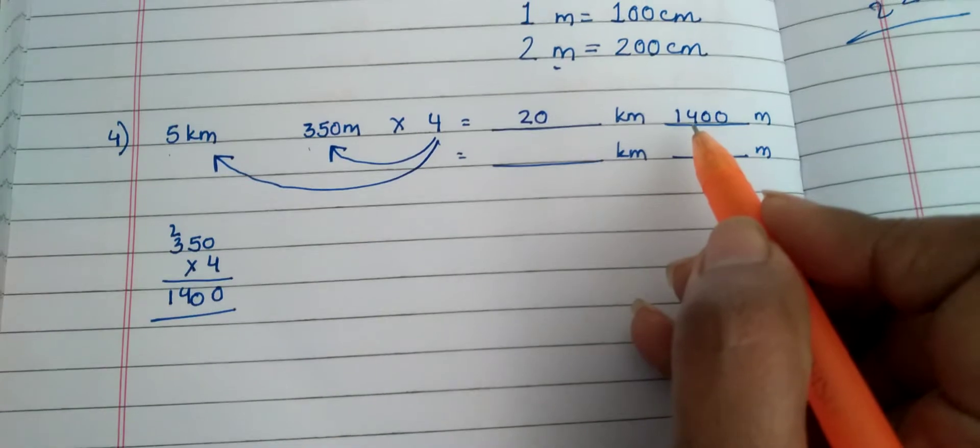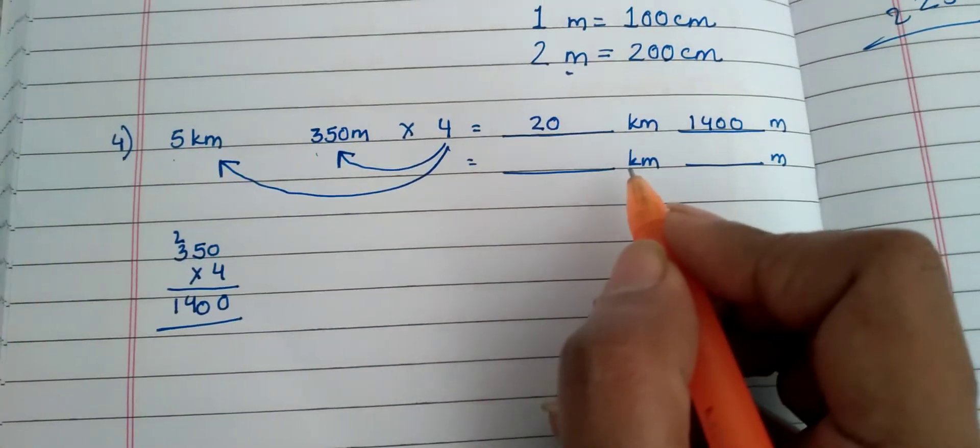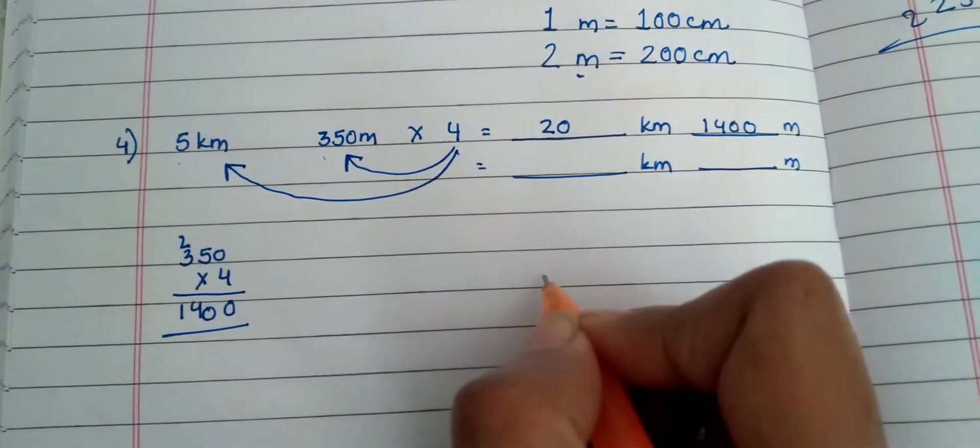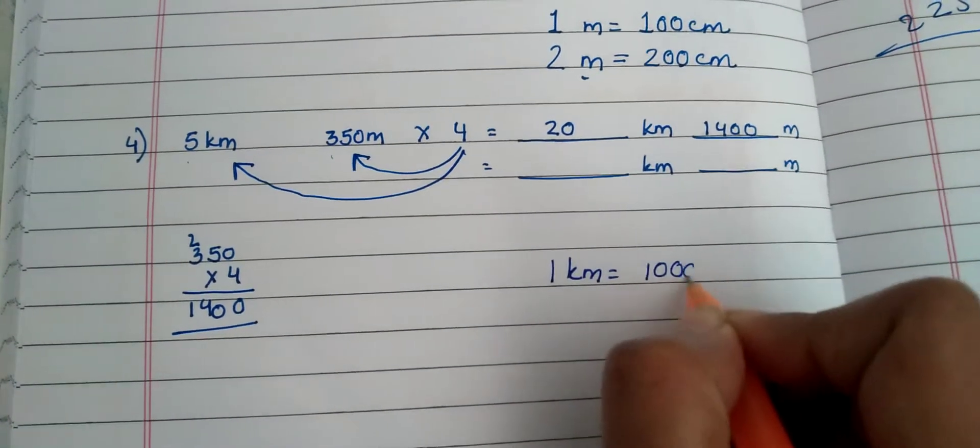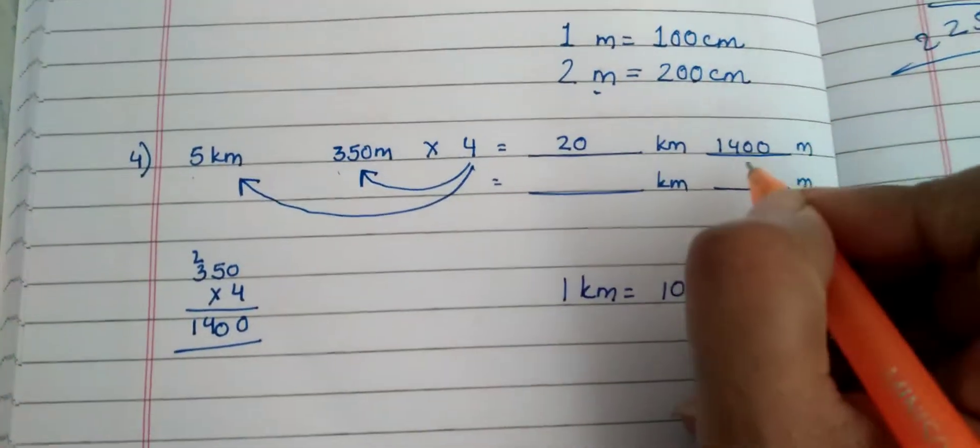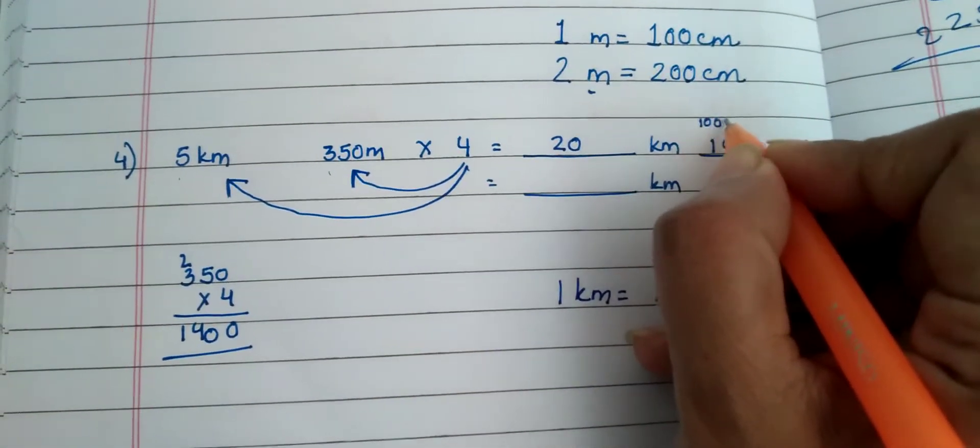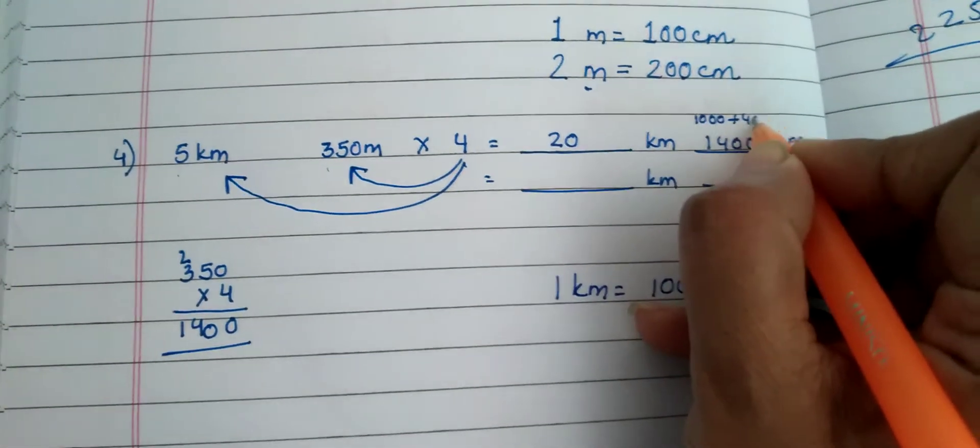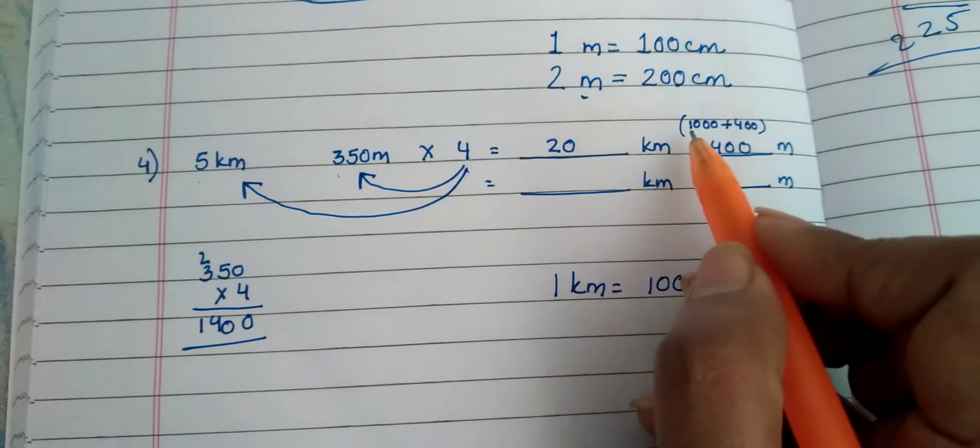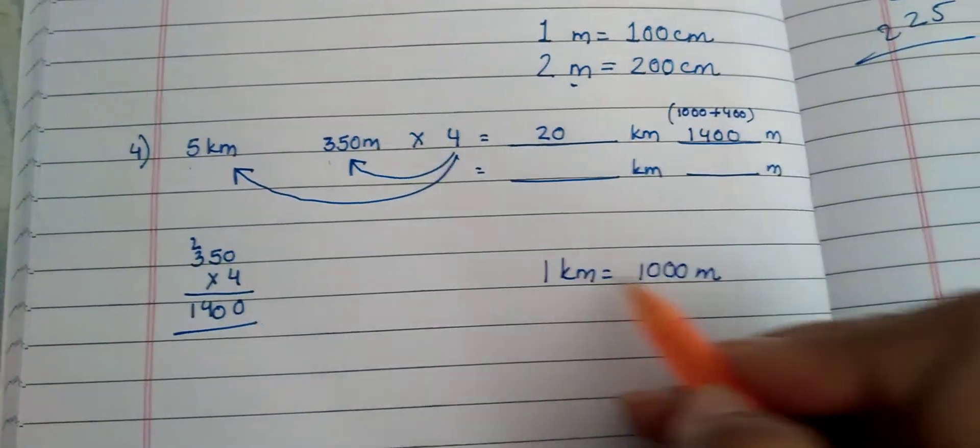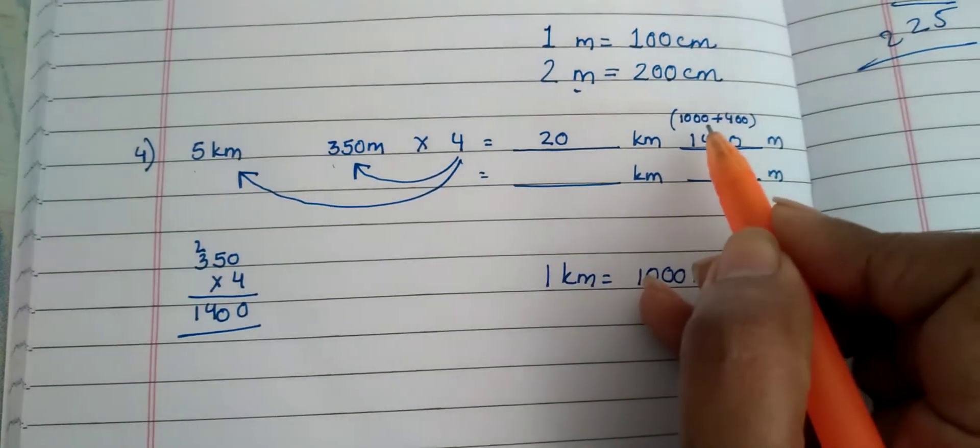Now see, it's 1400 meter. We know that here we're talking about kilometers and meters. We know that one kilometer is 1000 meter. 1400, see, this is 1000 plus 400. 1000 meter means one kilometer, right?